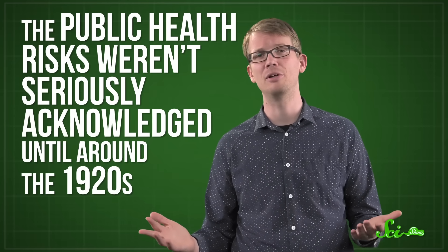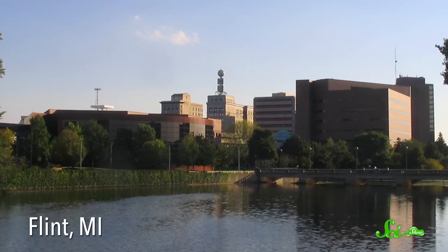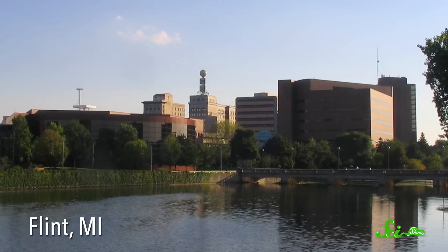People were suffering from lead poisoning, but the public health risks weren't seriously acknowledged until around the 1920s. And we gradually stopped making new water pipes from lead. But in lots of cities in the US, like Flint, Michigan, there are still several different kinds of metals in pipes for water.